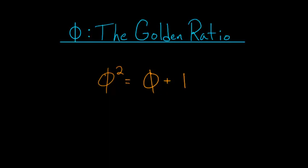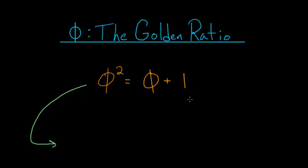In this video, let's focus on the continued fraction expansion of phi, otherwise known as the golden ratio. We can start with the relationship that phi squared is equal to phi plus 1. If we divide each side by phi, we're left with phi equals 1 plus 1 divided by phi.